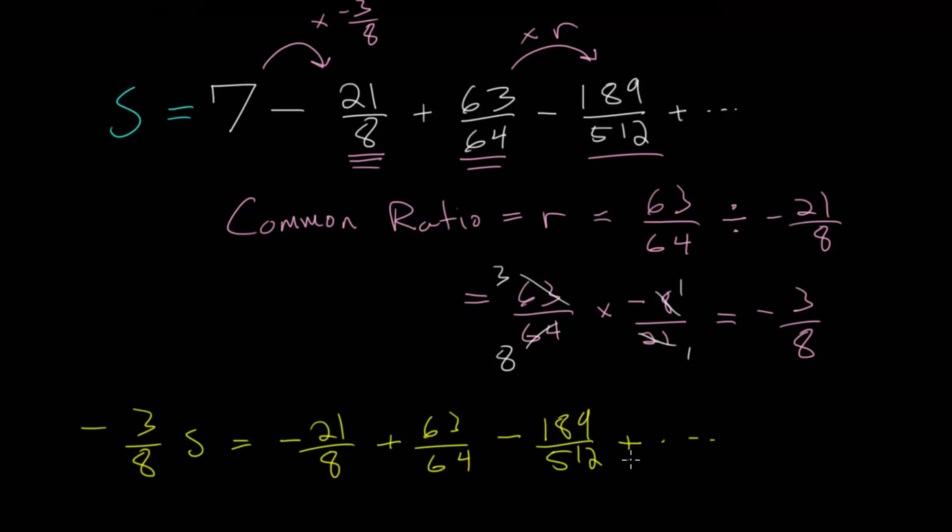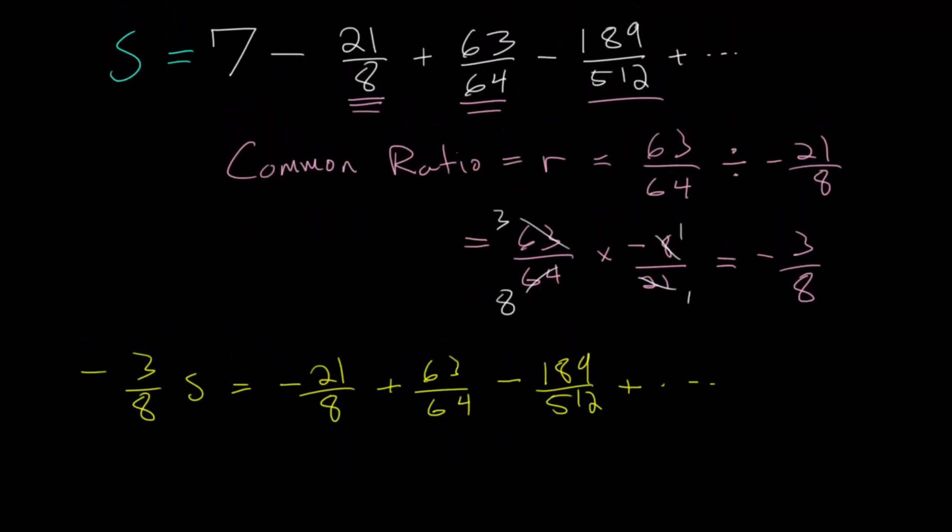So, the trick now is that we're going to take our original infinite geometric series, and we're going to subtract the new one that we created. And from there, we'll get an equation for S that we can actually solve. So, let's now write that we have S minus this bottom one, which is minus 3 over 8 times S.